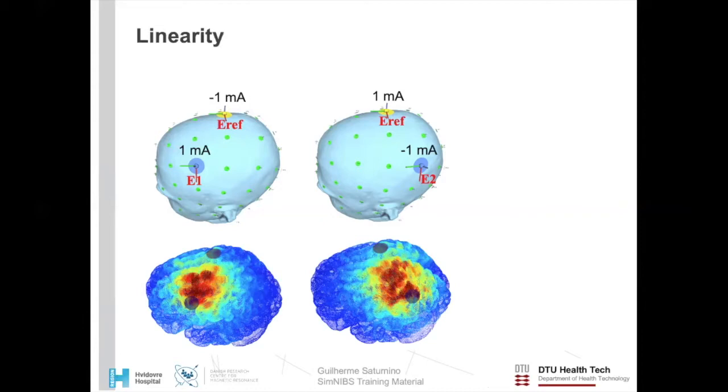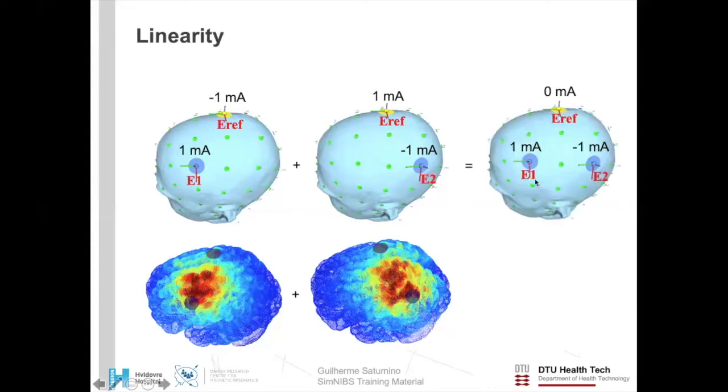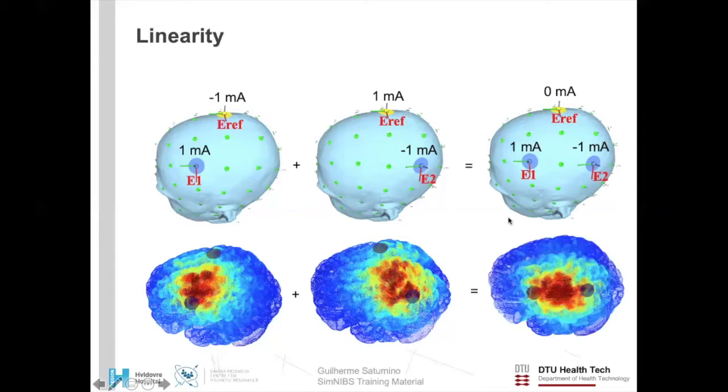Now, if I instead want to simulate the electric field that I would obtain by using the FC3 and the CP3 positions without CZ, I can multiply the second simulation by minus one and sum them. Now, the net result is zero current at CZ, and it goes completely out of the picture, as you can also see here in the electric field.